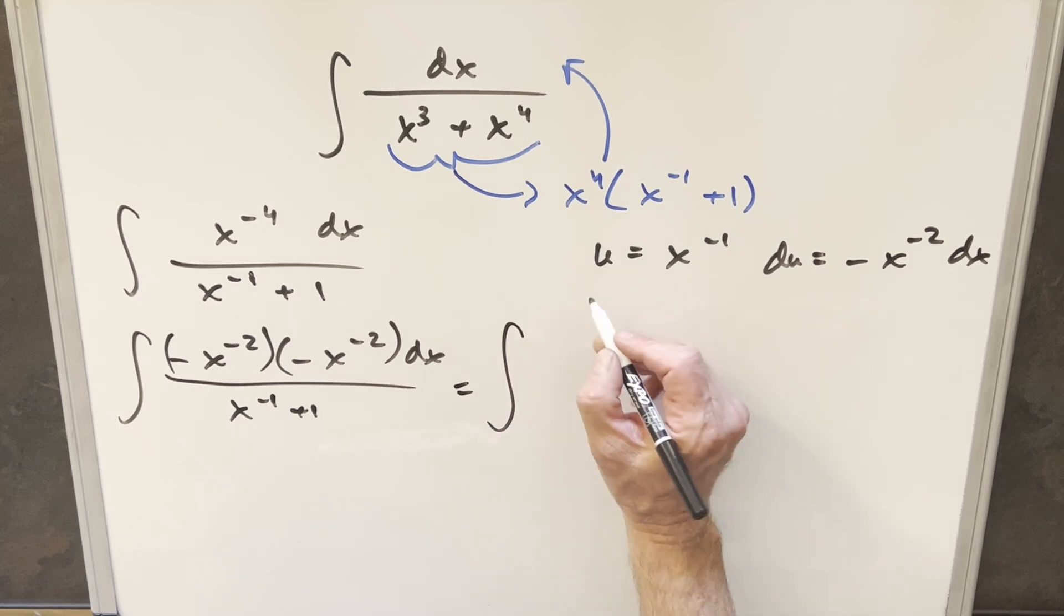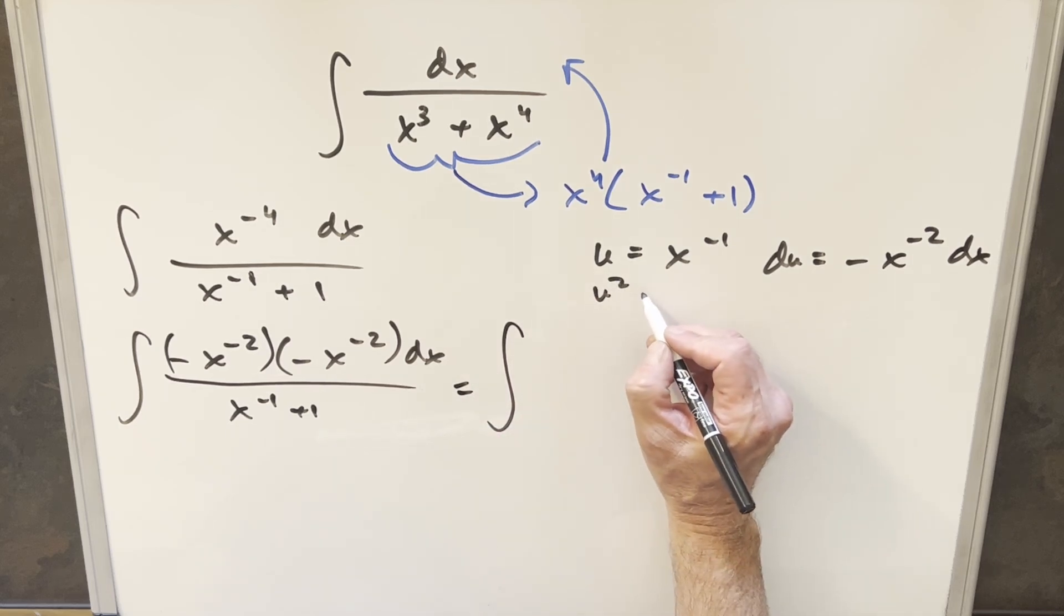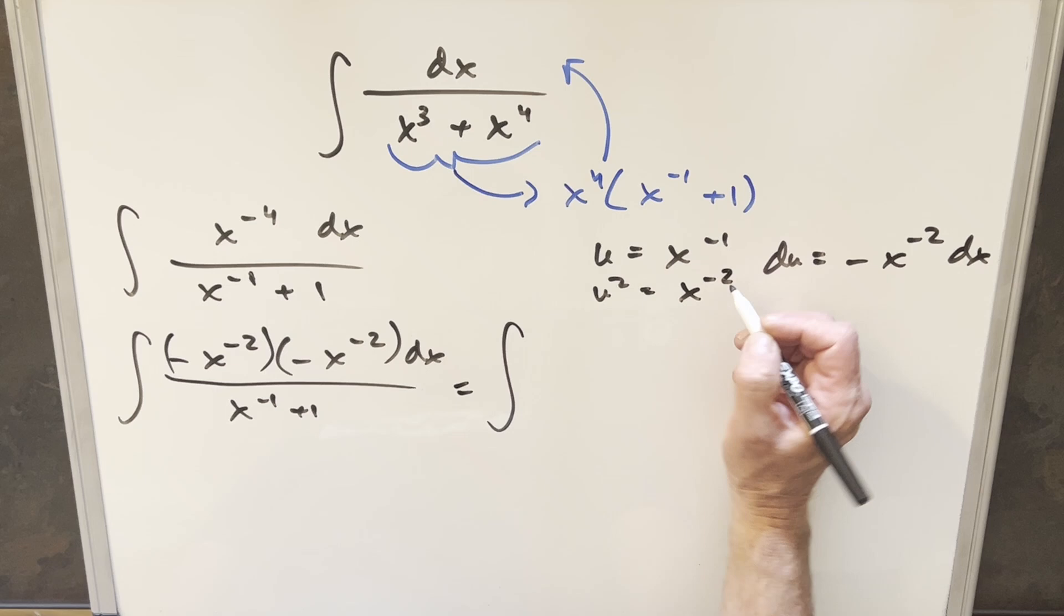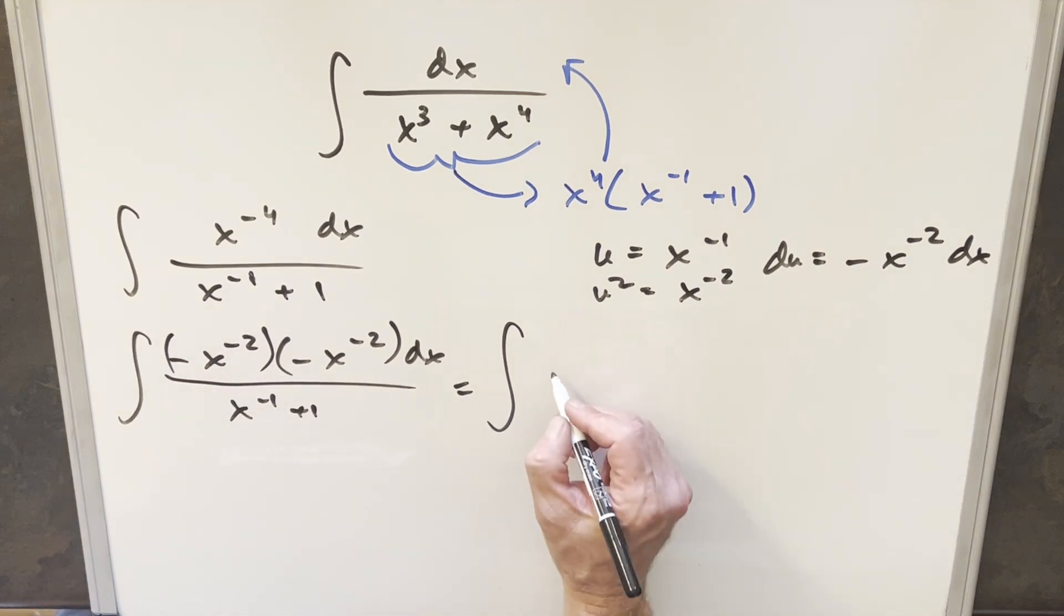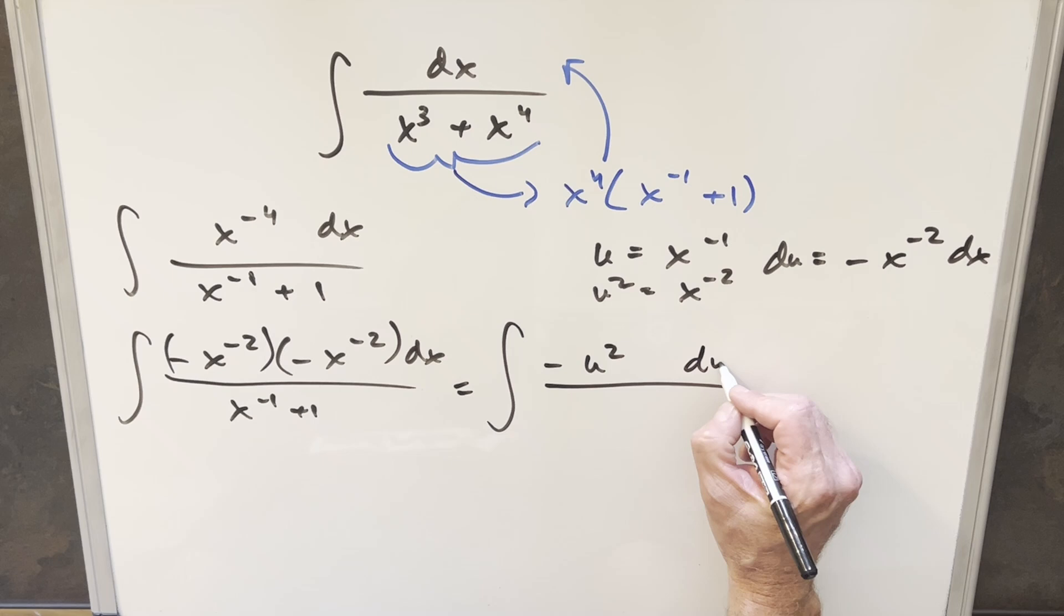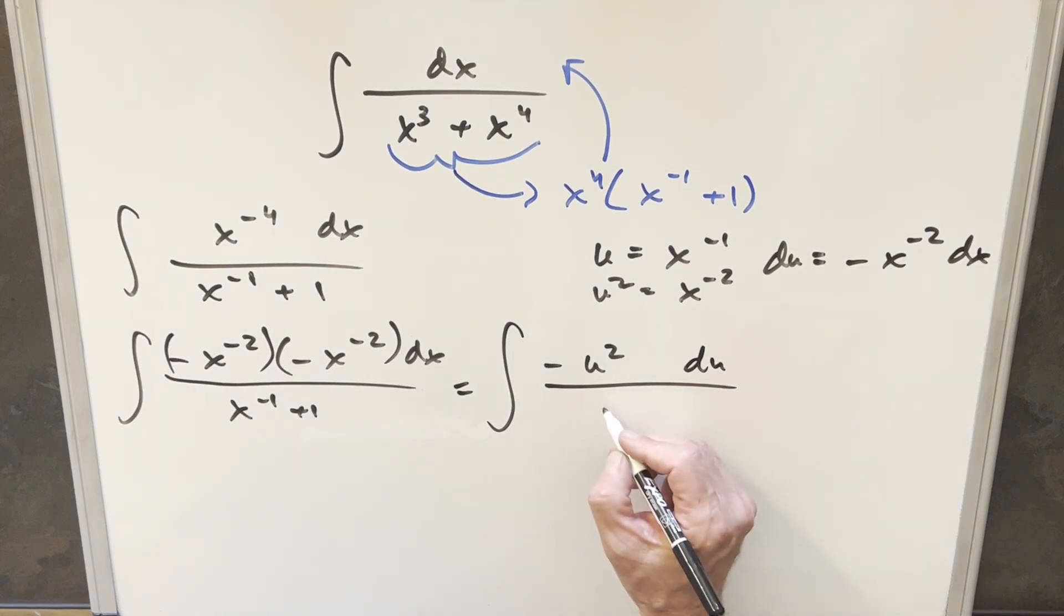So first, looking at this, notice if we have for u squared, that's going to be x to the minus 2 here. So this first part I can write is minus u squared. All this other stuff is du, and then the denominator just becomes u plus 1.